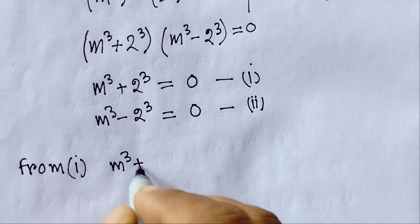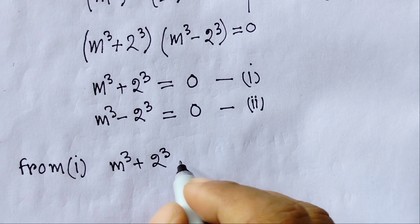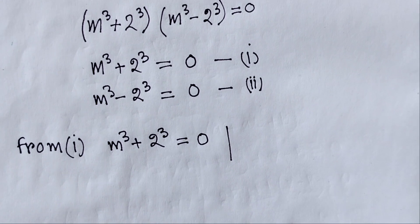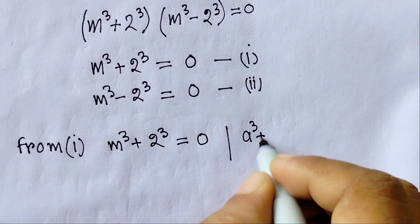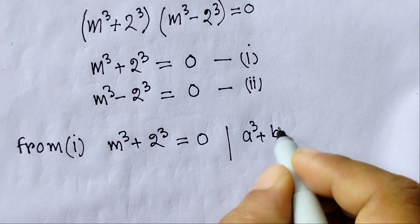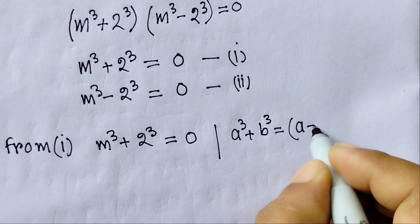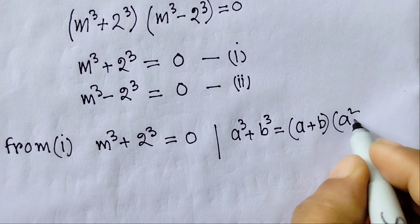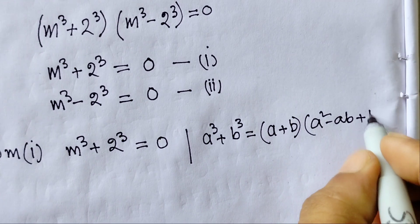Substituting the values, we get m equals negative 2 plus or minus square root of 2 squared minus 4 times 1 times 4, divided by 2 times 1.